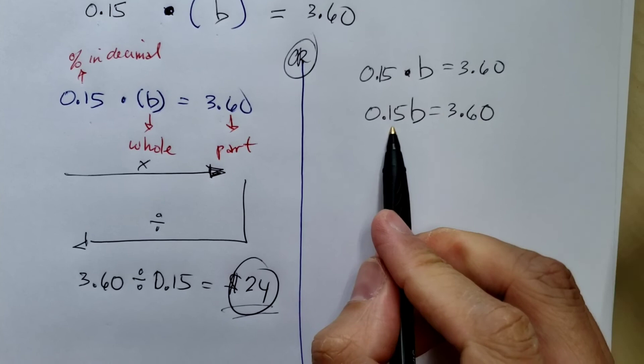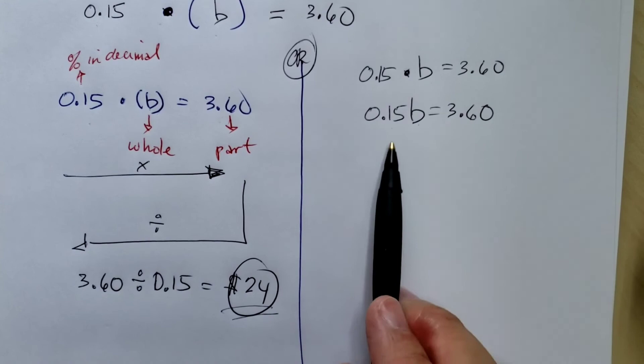So 0.15 B is a product of 0.15 times B. That's why we got this. Now, remember, one-step equation.